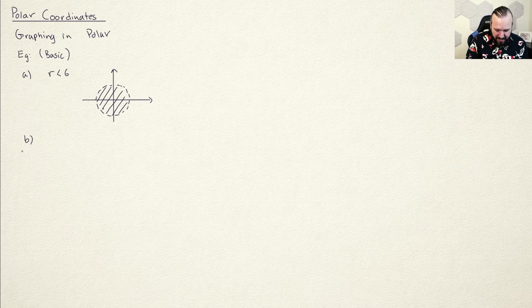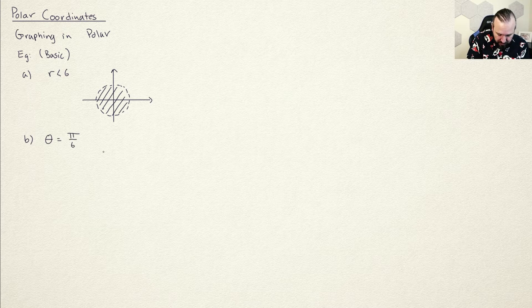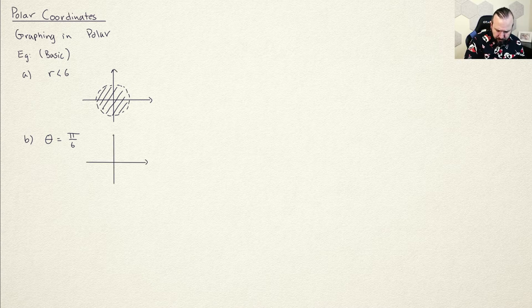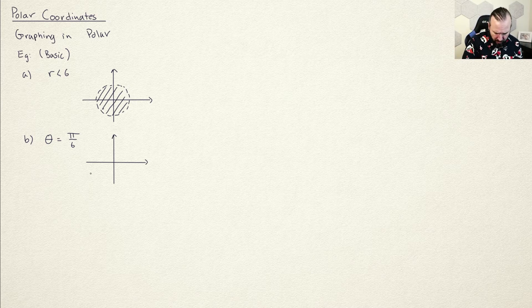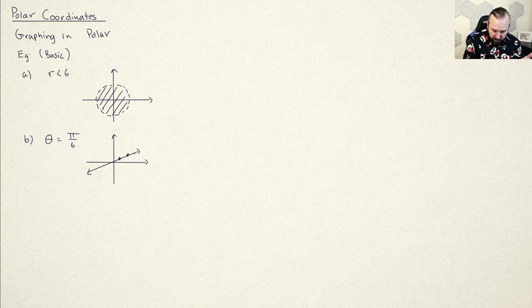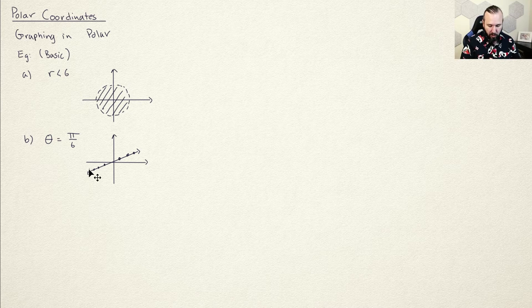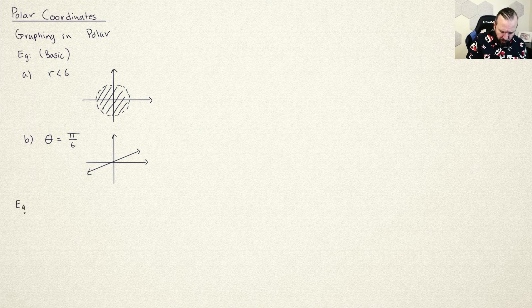The other basic type: if they give you theta equals a number — for example theta equals pi over 6 — that's just a line through the origin. This means theta equals pi over 6 for any value of r, since r is not specified. So you draw that pi over 6 line, and every point along it, for any r value, lies on that line.